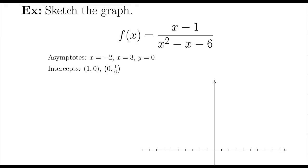Let's sketch the graph of the given rational function. Notice on this one we have two vertical asymptotes, so test points are very important here.